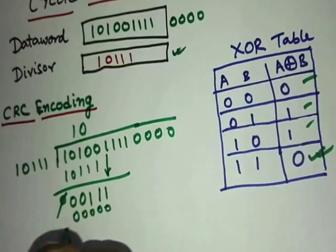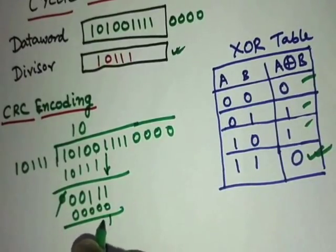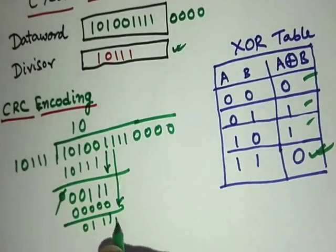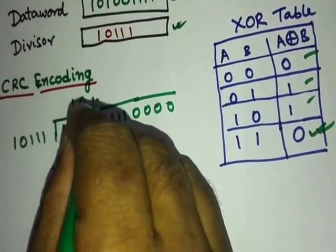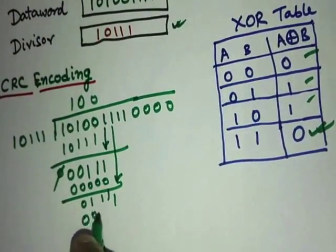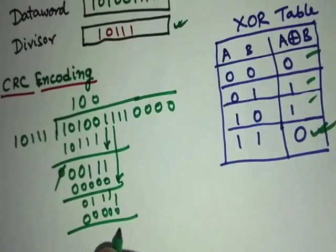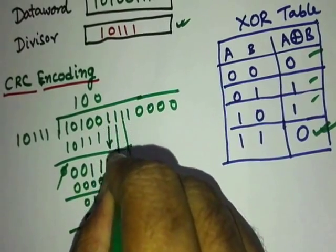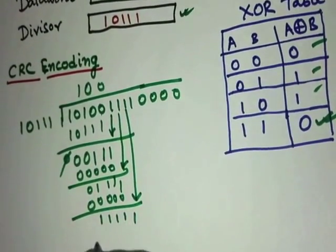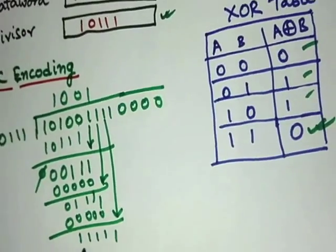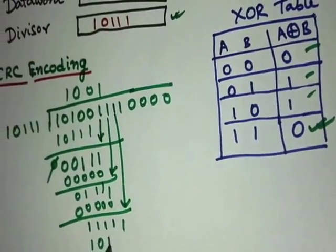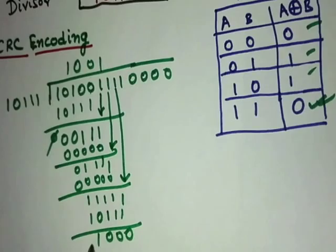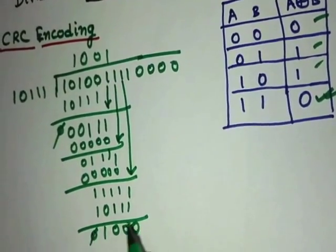We have 1 1 1 0 and we take the next bit. Again this leftmost bit is 0, it goes 0 times — 0 0 0 0 0 — and we get 1 1 1 1. We take the next bit. Now we have five ones, so it goes one time: 1 0 1 1 1, giving 0 0 0 1. We ignore the leading zeros.